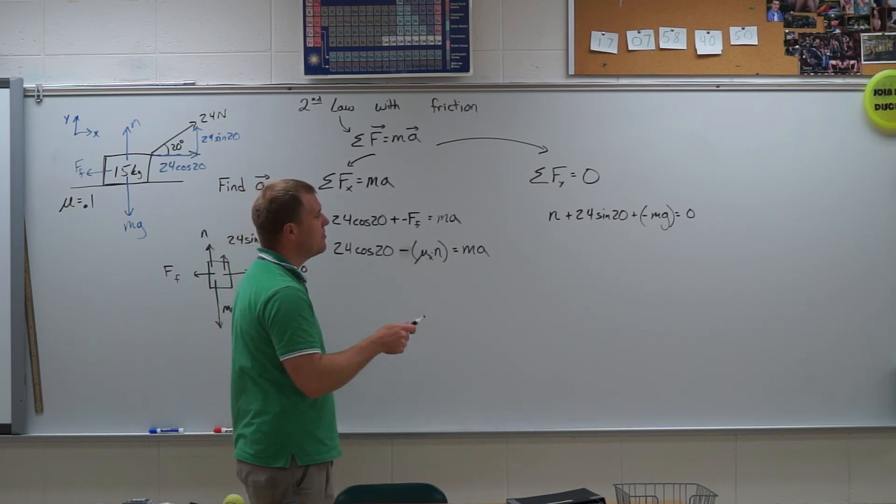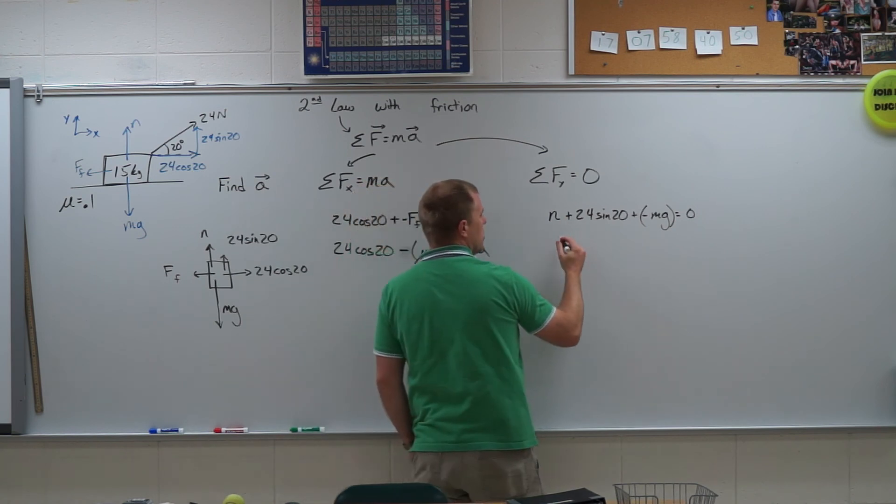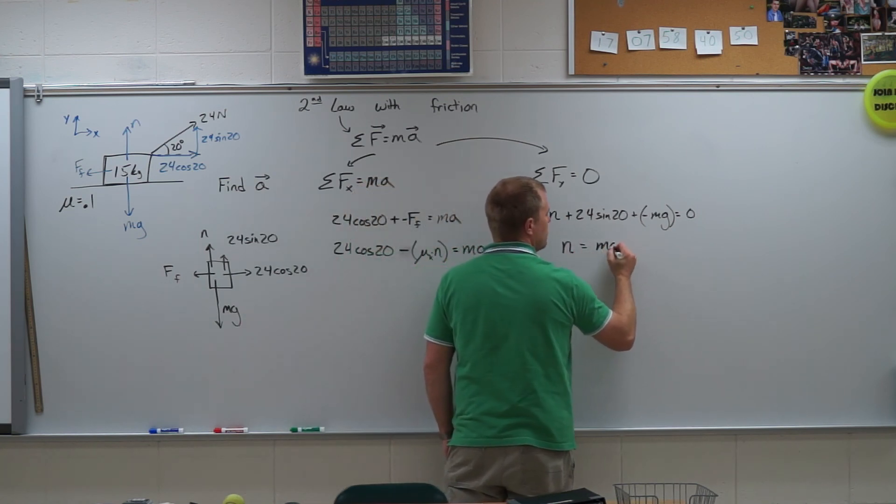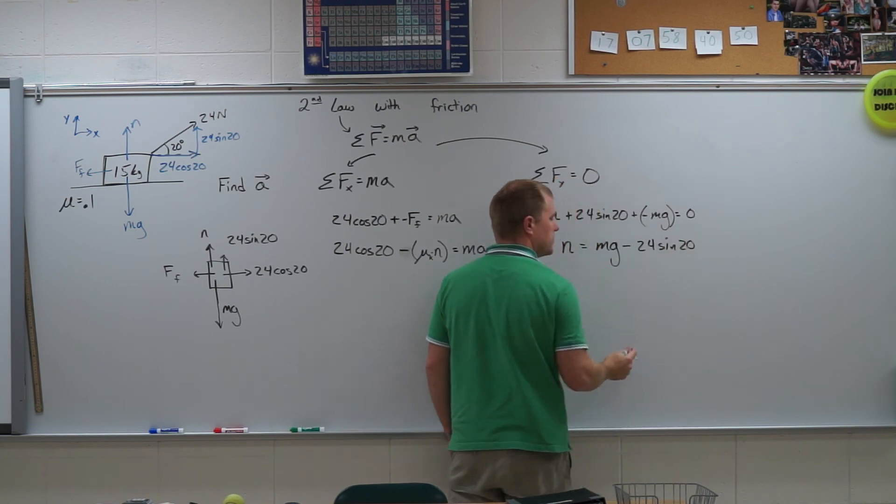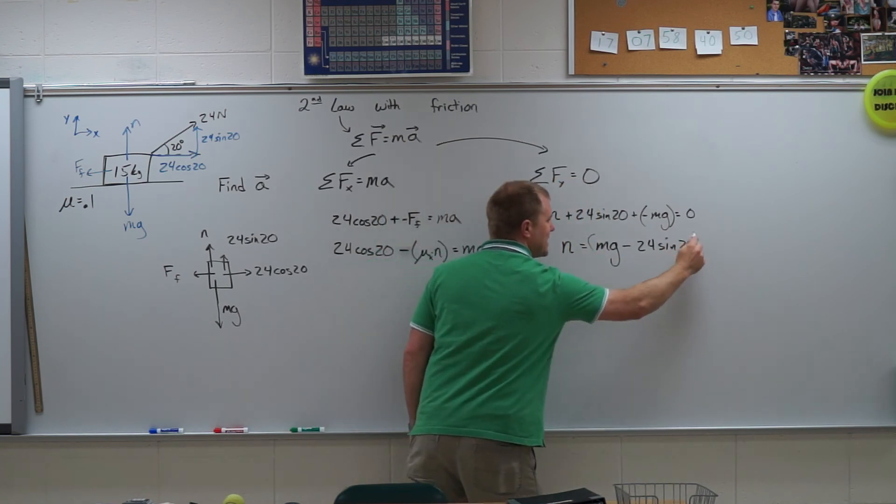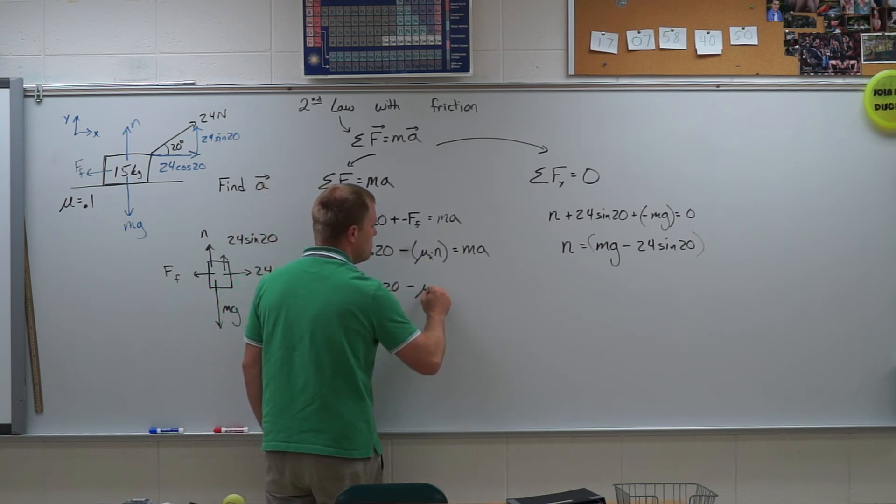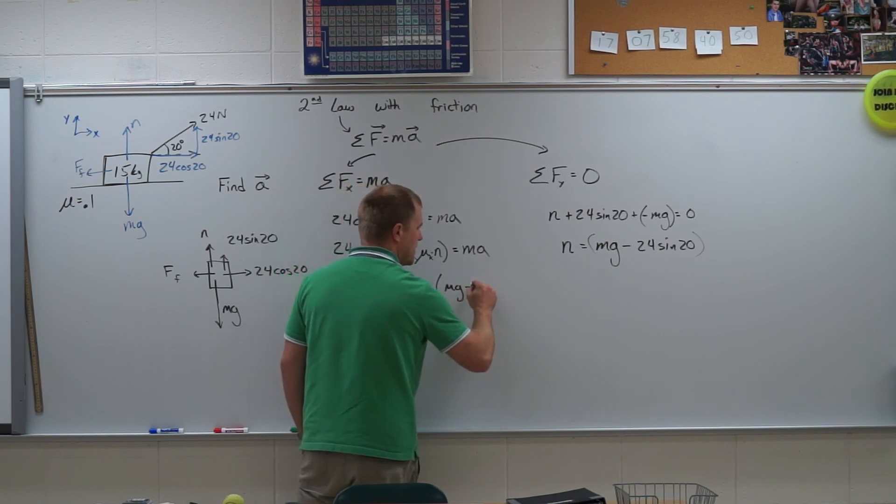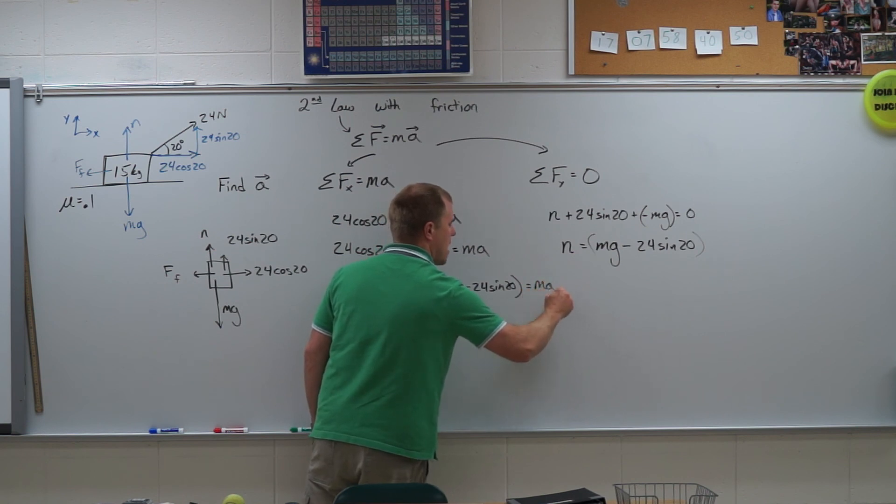So where do I find the normal force? I'm going to find the normal force over here in my y direction. So the normal force is equal to mg minus 24 sine of 20. I'm now going to take this and substitute it in there. This equation is going to be huge. 24 cosine of 20 minus mu times mg minus 24 sine 20 equals ma.